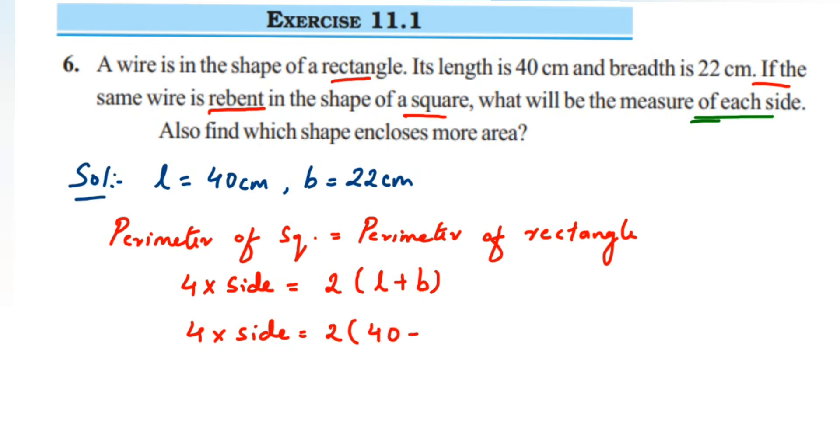So 4 × side is equal to 2 × (40 + 22), which is 2 × 62.